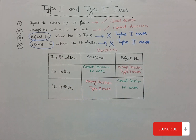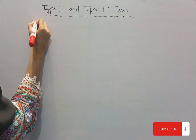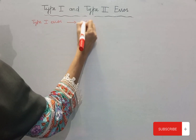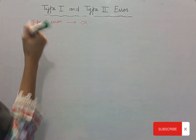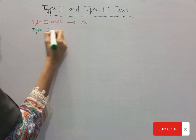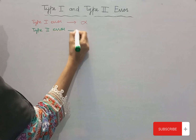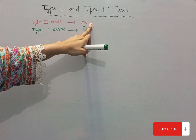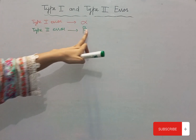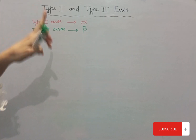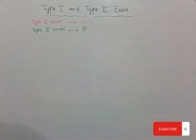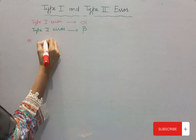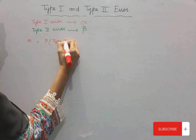Type 1 error is denoted by alpha, and Type 2 error is denoted by beta. Alpha shows the probability of Type 1 error, and beta shows the probability of Type 2 error.